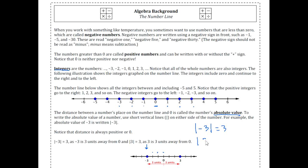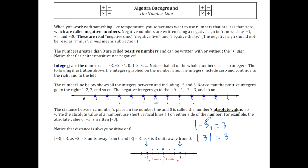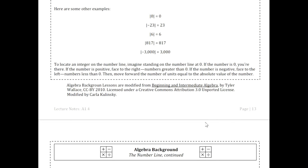The absolute value of positive three is also positive three, because three is also three units away from zero. If we start at three, we have to go one, two, three units to get back to zero. The absolute value of zero is zero, because zero is at zero, so its distance from itself is zero.